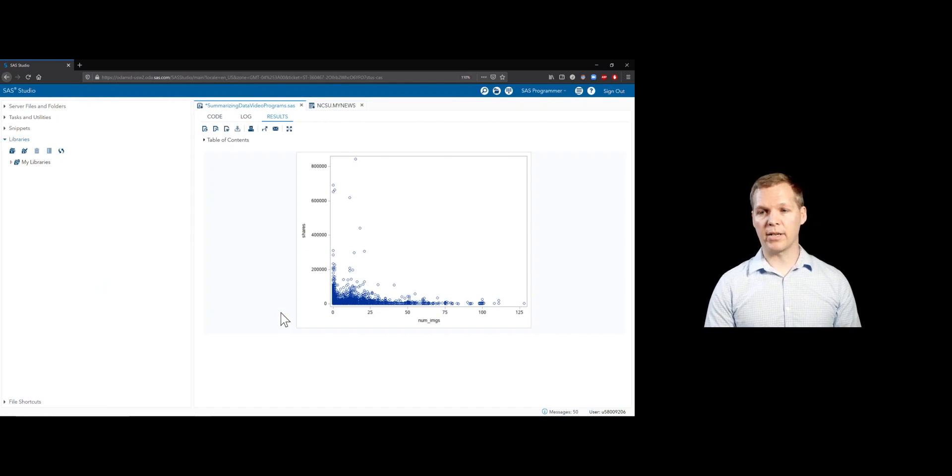Let's go ahead and run that and see what happens. Okay, takes a second to run here. But we can now look at the relationship between the number of images and the shares that we have. So that's kind of useful. We can see that there's a lot of articles that don't have a lot of images. And then less and less as we go out, of course, numbers. And then we can see how the shares are related.